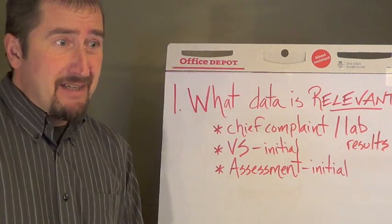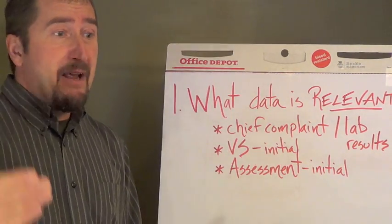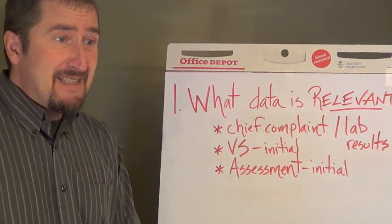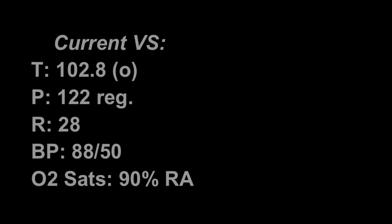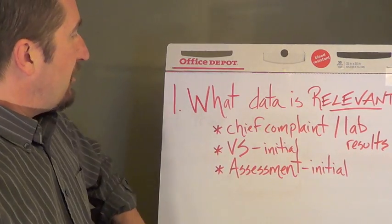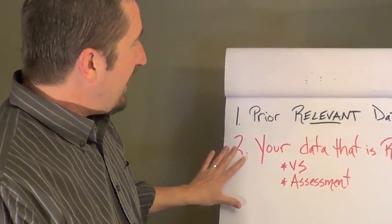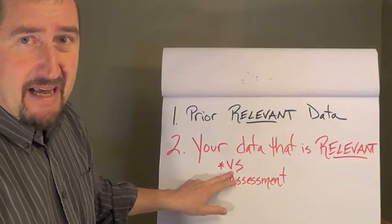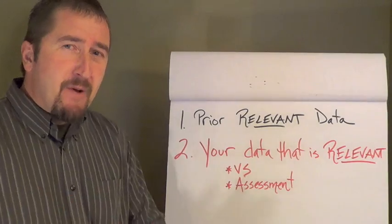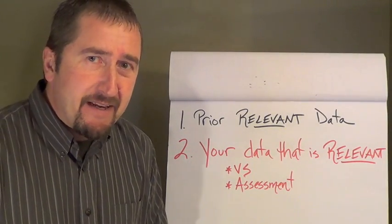Now you perform your first assessment, and now you have vital signs of 102.8, a pulse of 122, respirations of 28, and the blood pressure is now 88 over 50, and sats are 90% on room air. Let's look at the second clinical reasoning question in this case study in our vital signs. What is now relevant that must be recognized as clinically significant to the nurse?